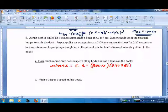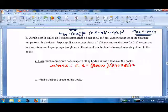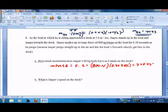We know that impulse is equal to change of momentum, so 800 times 0.3 equals 240 kg meters per second.